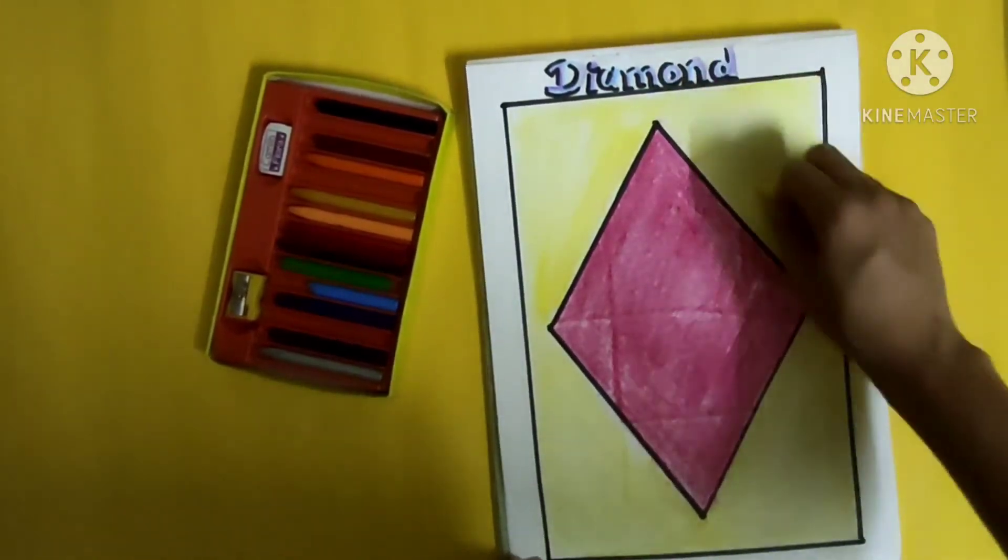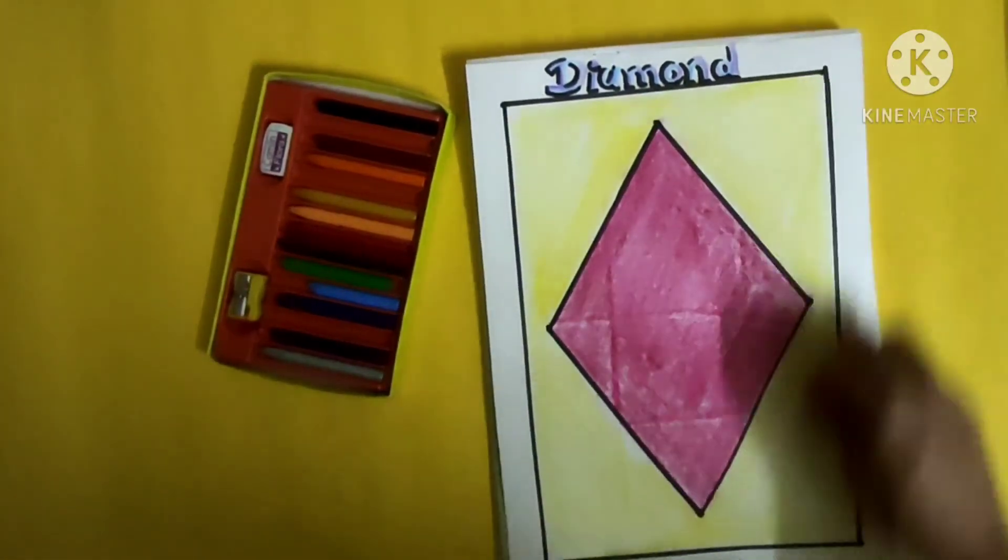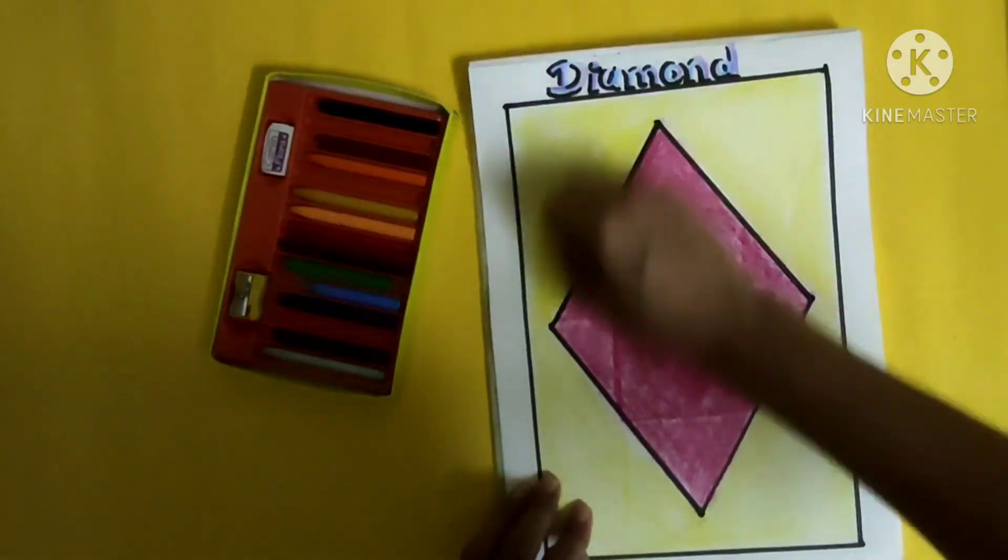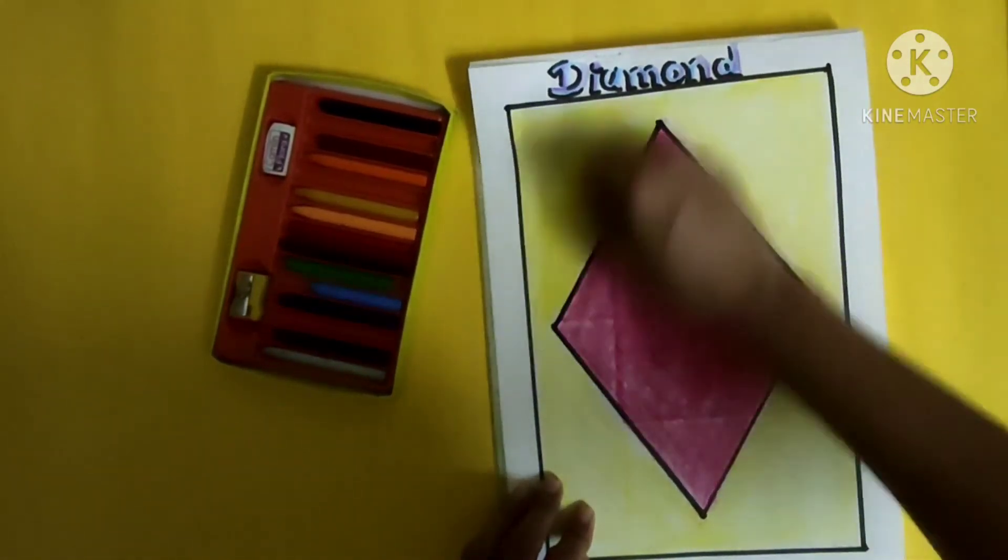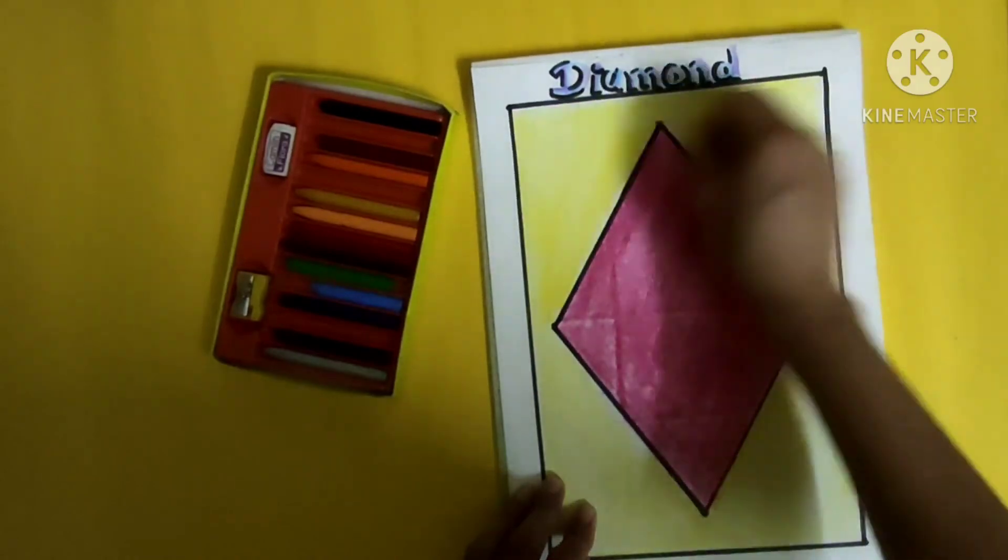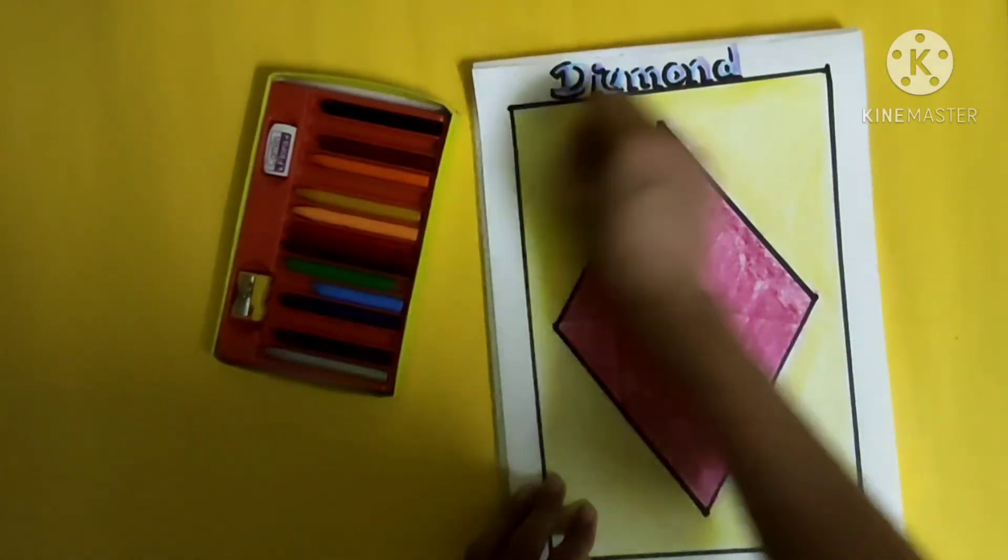Which colors are we using for diamond? It's red, so yellow and red we are using for this drawing.